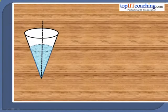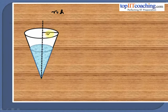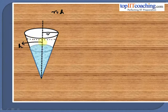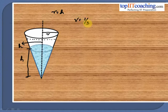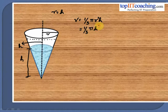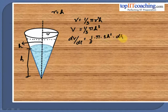Since this is a 90-degree conical funnel, the radius is equal to the height. This is the radius and this represents the height. As water inside the funnel is coming out, the height is decreasing. At any instant, the height is h. Volume of the cone is 1/3 π r² h. Since r equals h, this becomes 1/3 π h³. Differentiating both sides with respect to time, dV/dt equals 1/3 times π times 3h² times dh/dt.